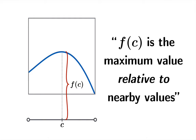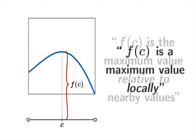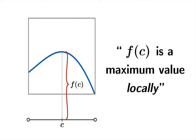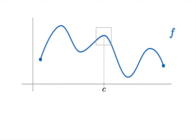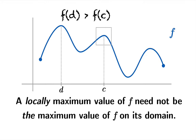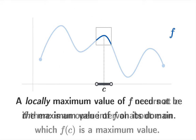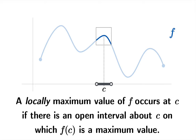In this case, we say f(c) is the maximum value relative to nearby values — relative to just things you can get nearby, f(c) is as big as you're going to get, or f(c) is a maximum value locally. Going back to the bigger picture, there is an argument d where f(d) is bigger than f(c). So a locally maximum value of f need not be the maximum value of f over its whole domain. What's key is that you can build an interval around the argument, and on that interval the function value is as big as it gets — that's what we mean by a locally maximum value.